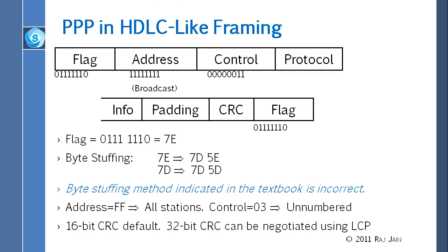For error detection, PPP uses a 16-bit CRC — not just a checksum. There is a polynomial: a 17-bit number used to divide. So it has error detection, but no correction and no retransmissions.